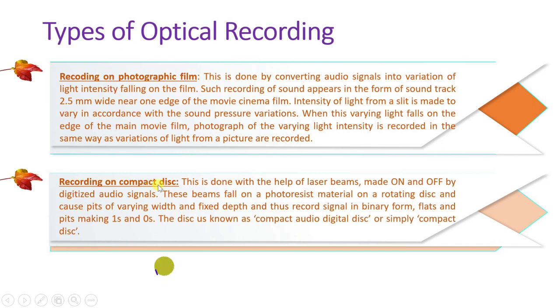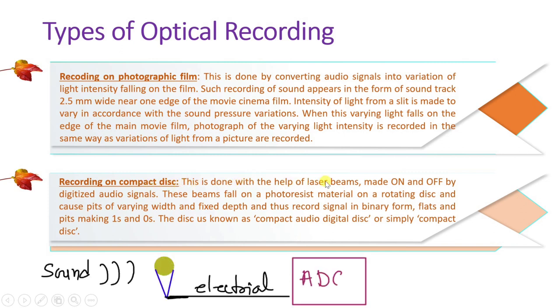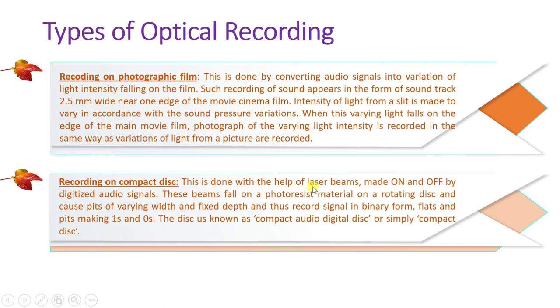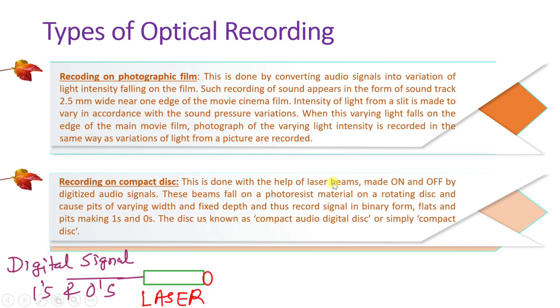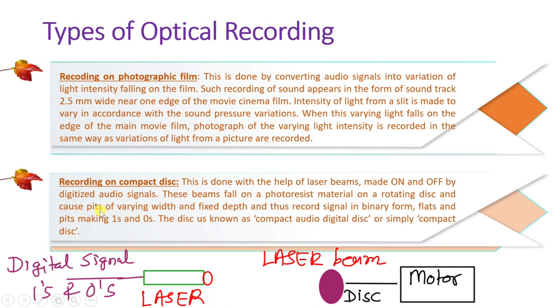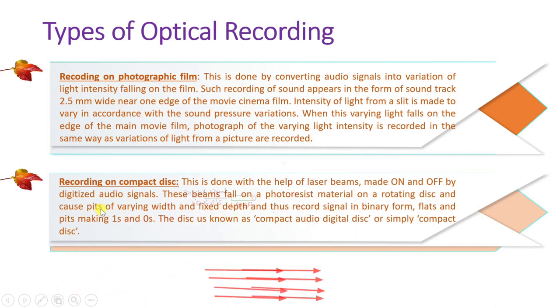The second type of optical recording is recording on compact disc. Here, a laser beam is used — the electrical signal is first converted into a digital signal of ones and zeros, which turn the laser beam on and off. That on/off pattern is recorded on the disc as variable-width pits, storing digital sound. This is also called a compact audio digital disc. In this session, we focus on recording on photographic film.